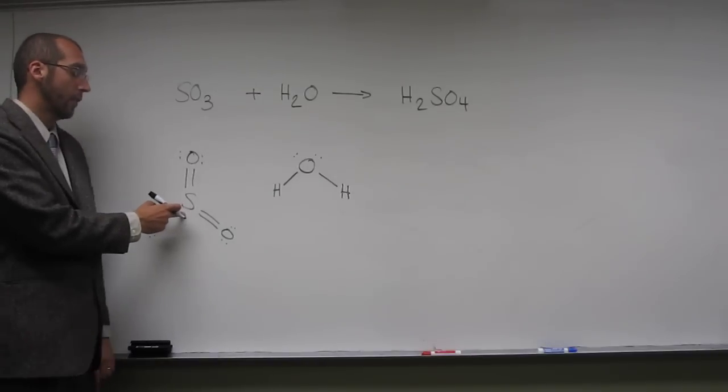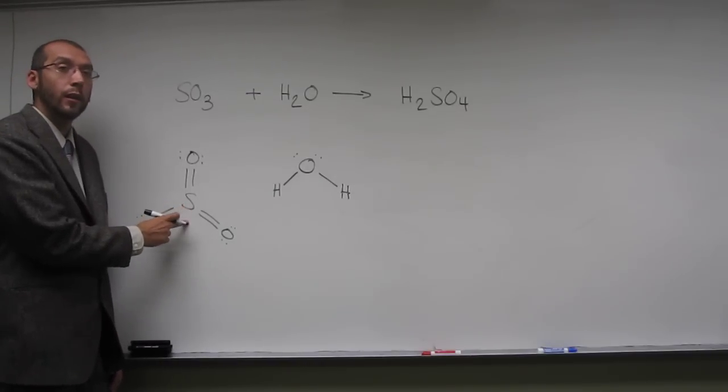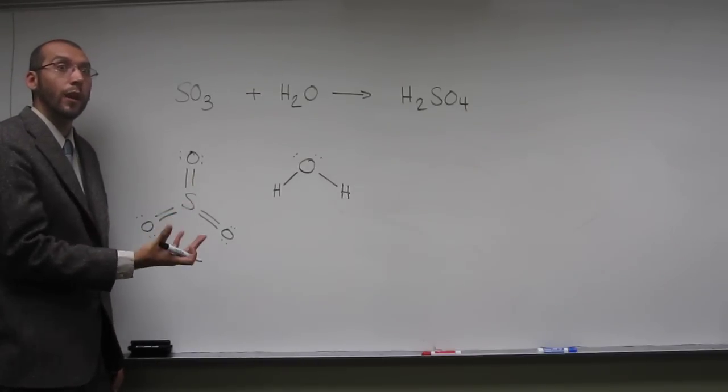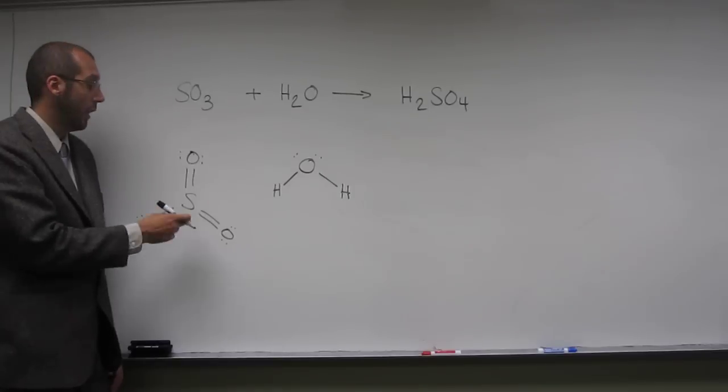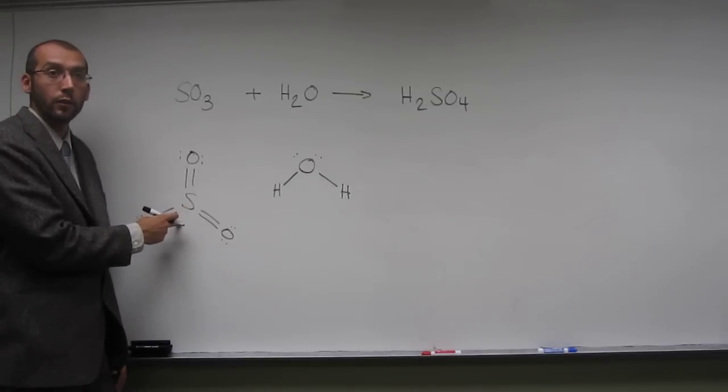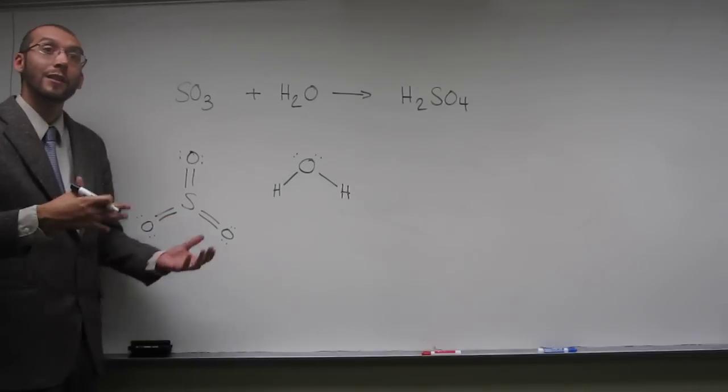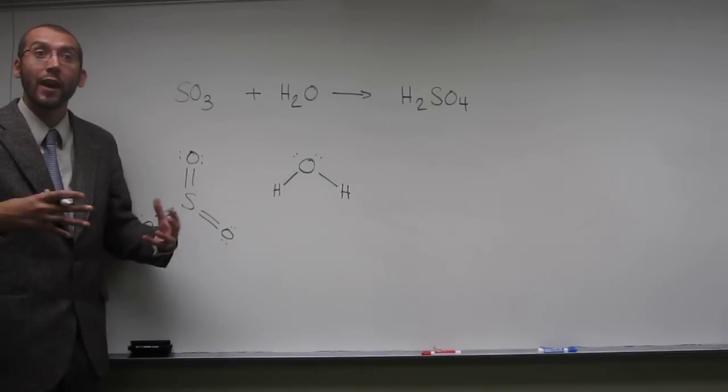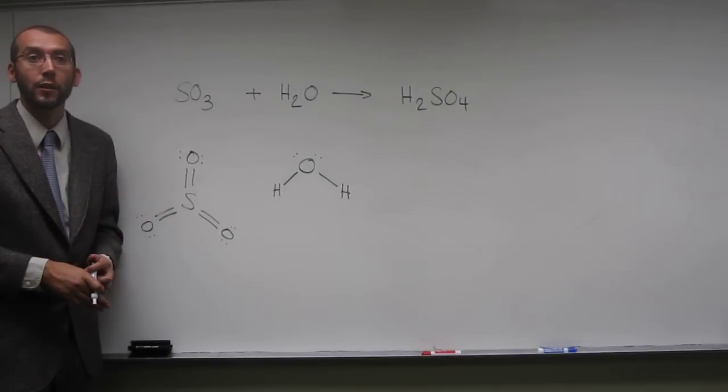So this sulfur has already expanded its valence, but we know sulfur can expand its valence. So it must be the thing that's accepting the electrons since nothing else can accept any more electrons around it. They have the maximum amount of electrons that they can accept.